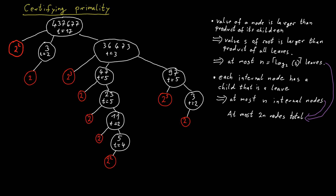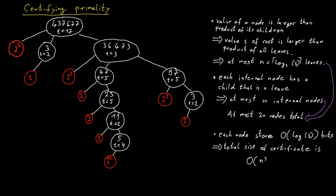The information we need to store for each node in the tree is no more than on the order of two numbers that are not larger than s, so on the order of log s bits per node. Therefore the total size of our certificate is 2n times O(log s), where n = ⌈log s⌉, giving a total certificate size of O(n²), where n is the size of the input. This shows that our certificate is small enough — despite being non-trivial, its total size is polynomial in the size of the input.